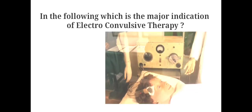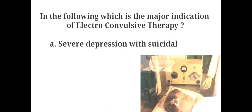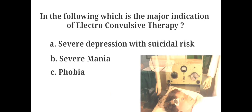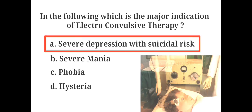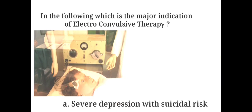Which is the major indication of electroconvulsive therapy? A. Severe depression with suicidal risk, B. Severe mania, C. Phobia, D. Hysteria. The answer is A. Severe depression with suicidal risk. Electroconvulsive therapy may be the first line of treatment for life-threatening depression.